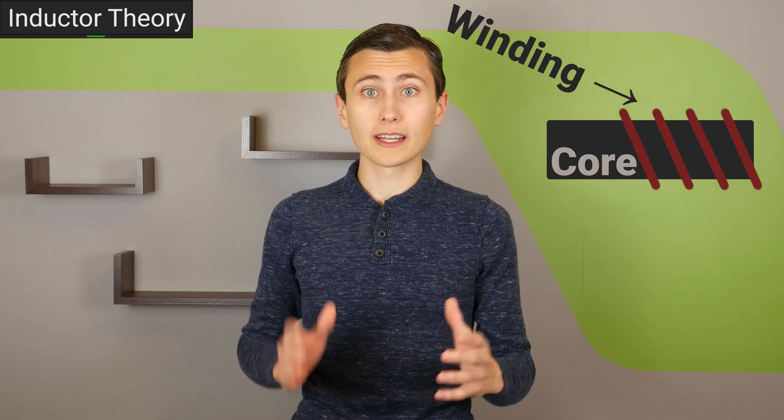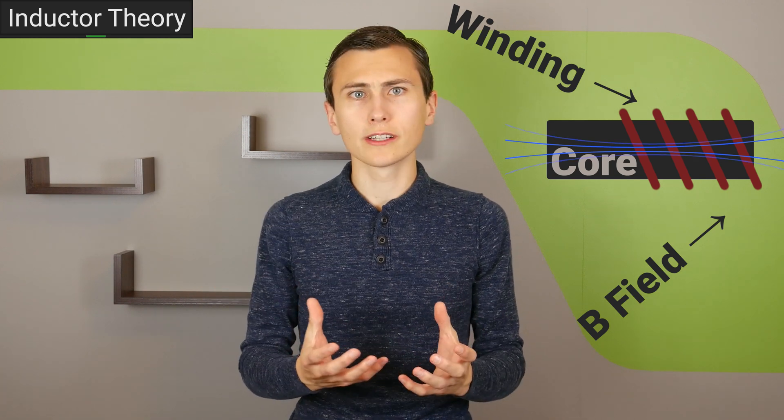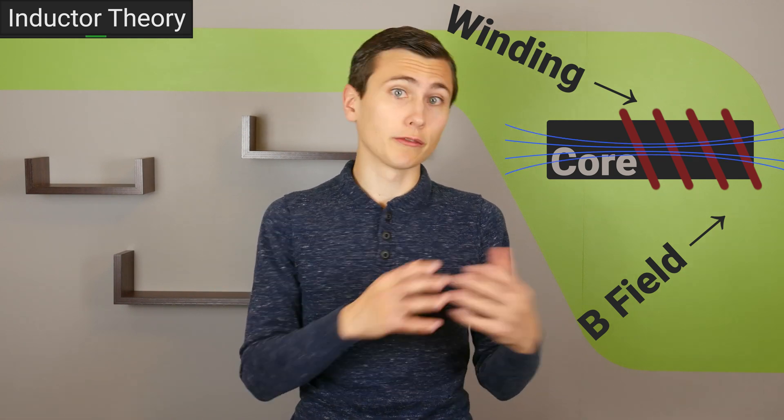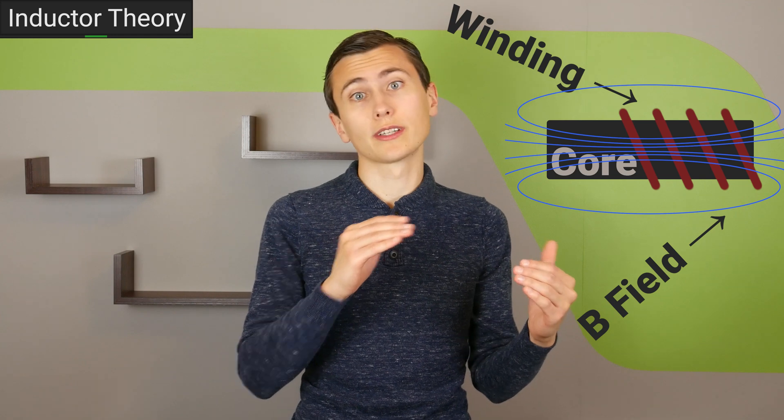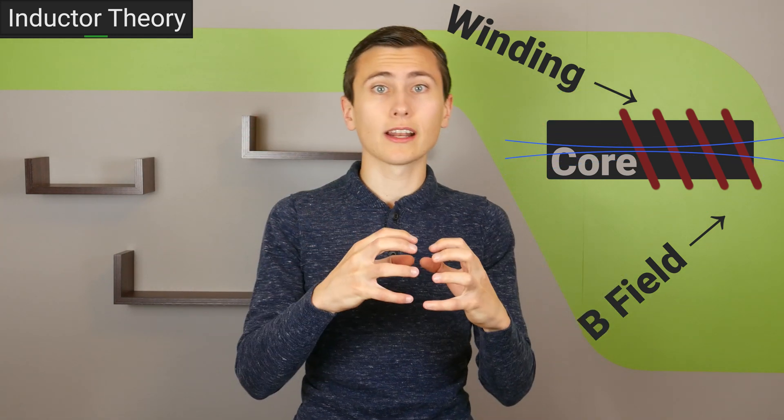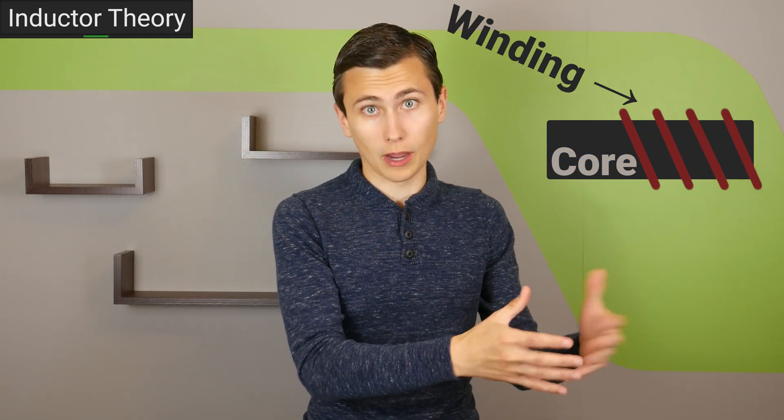Energy is stored in magnetic flux within that core and that's where an inductor gets the energy it needs to generate a voltage when the current through it tries to decrease. It uses that energy stored within it to output some power.